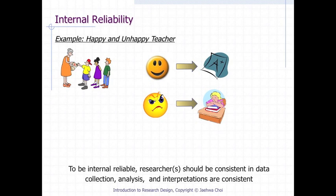Internal reliability example. We have a teacher. If the teacher is a generous grader when she's happy and a tough grader when she's angry, we can conclude that she's a bad teacher. Why? Because her grading system is not reliable.